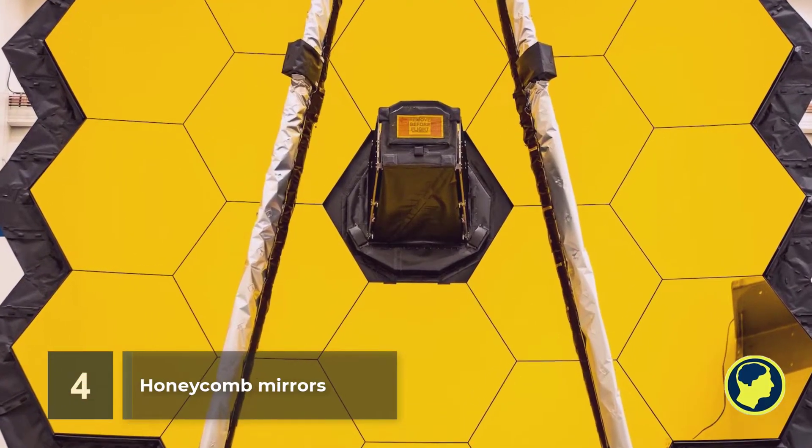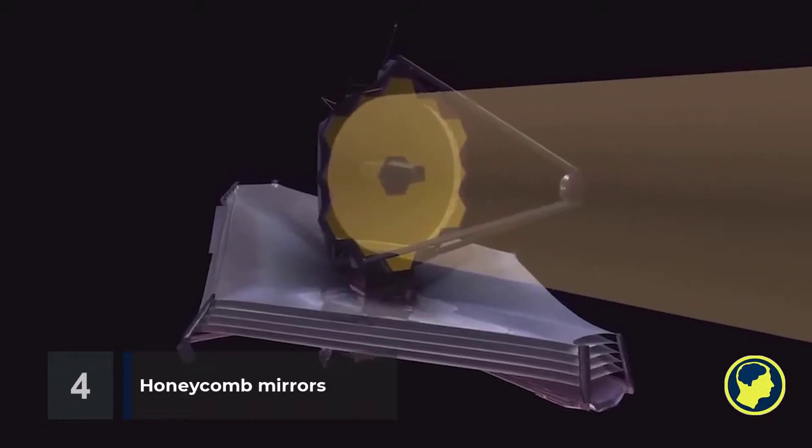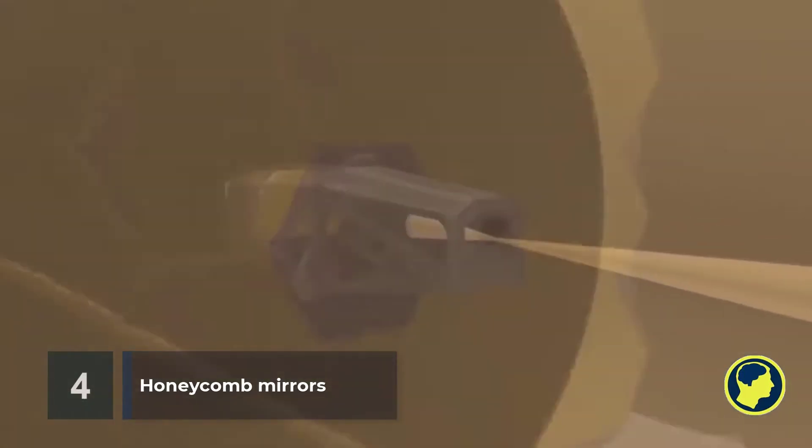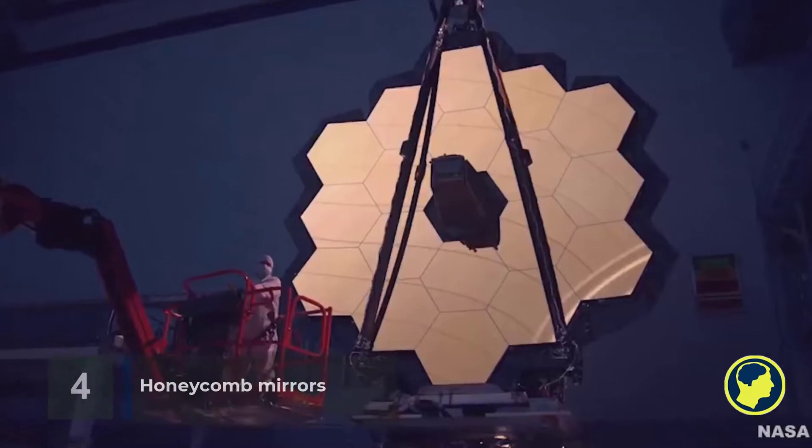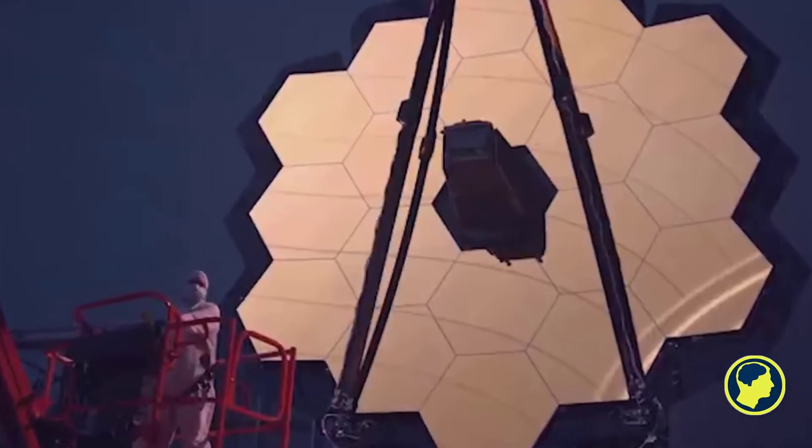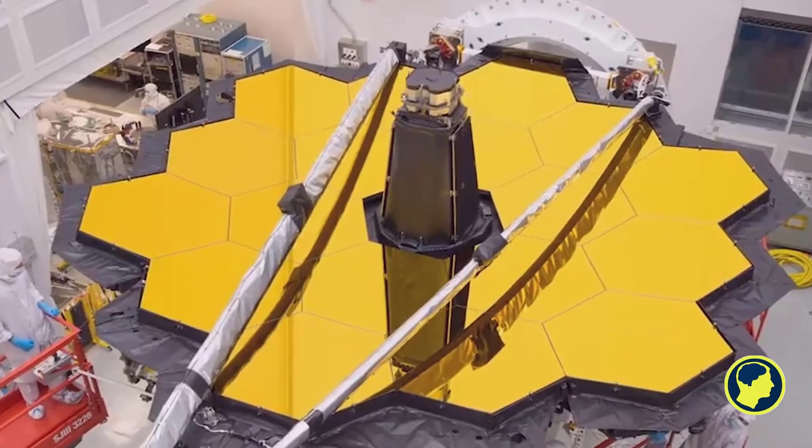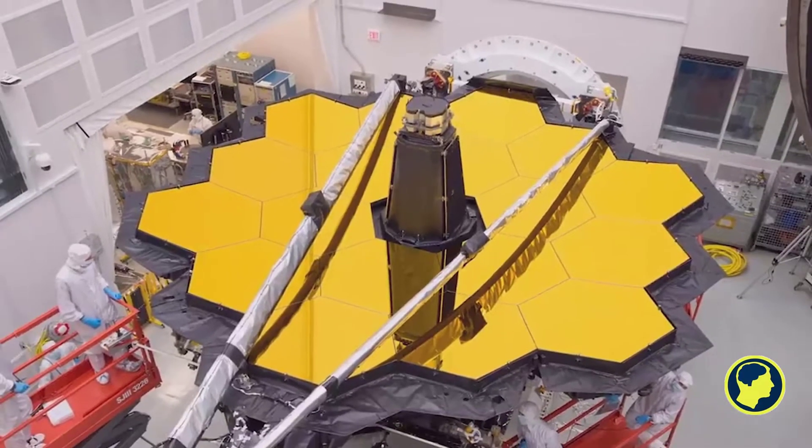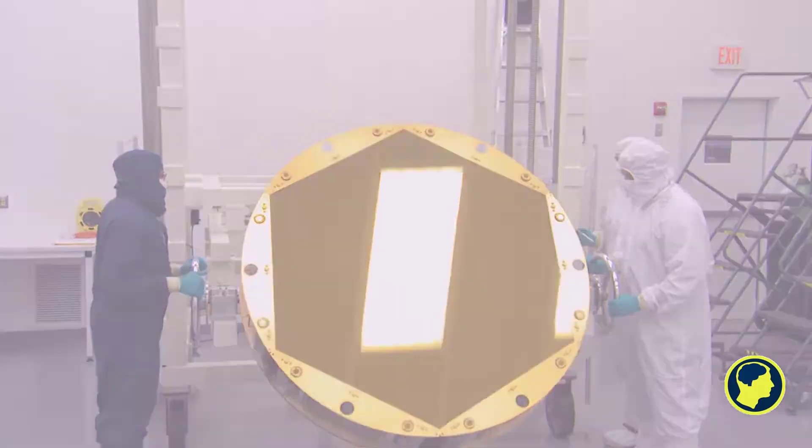Number 4: Honeycomb Mirrors. A telescope's mirror helps reflect light into its cameras. The better the mirror, the more light the observatory will capture and the more it will reveal. The Webb Telescope boasts 18 primary mirrors, built together in the shape of a honeycomb.